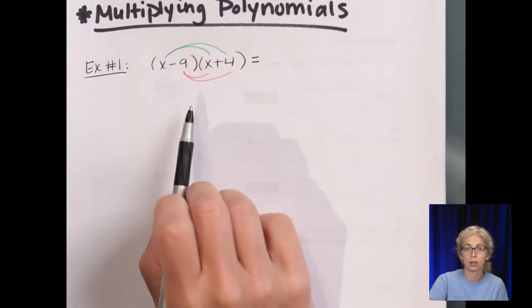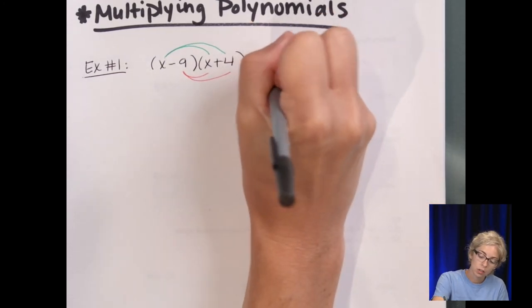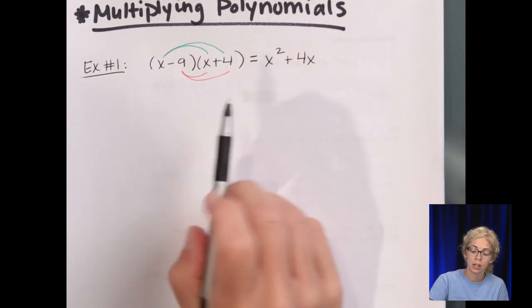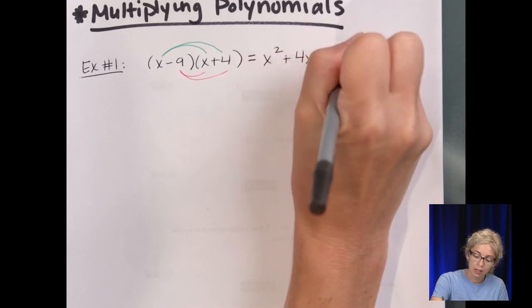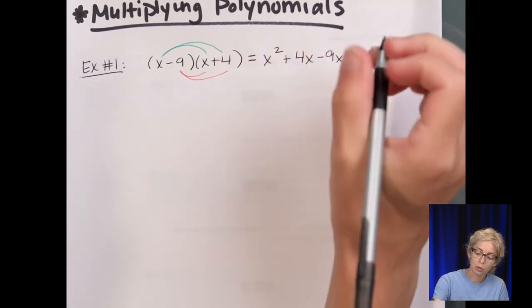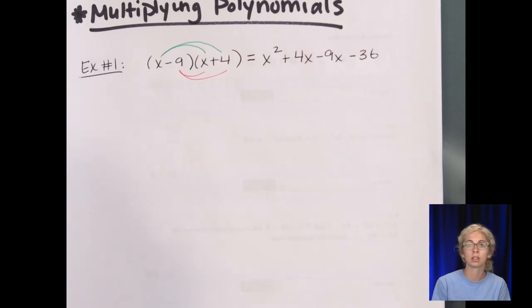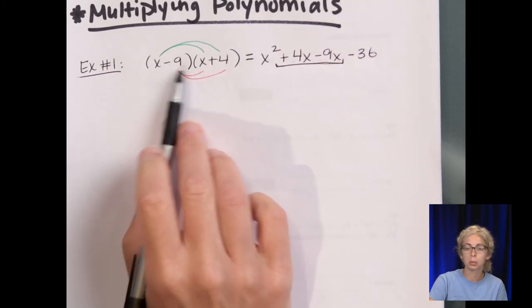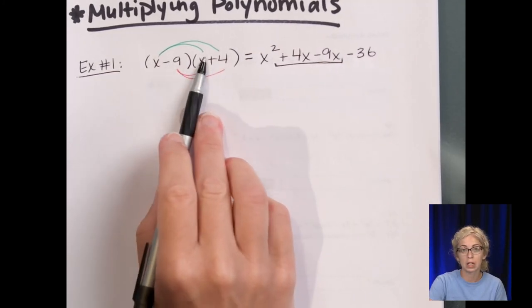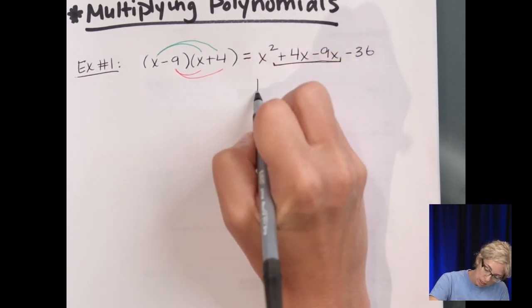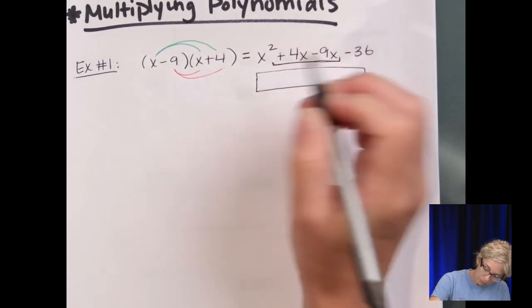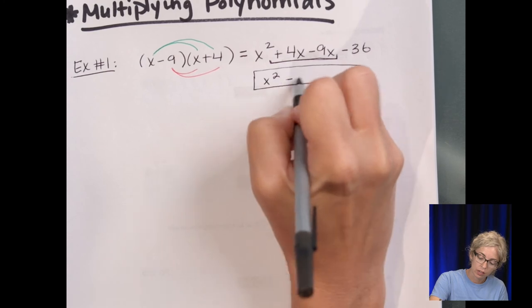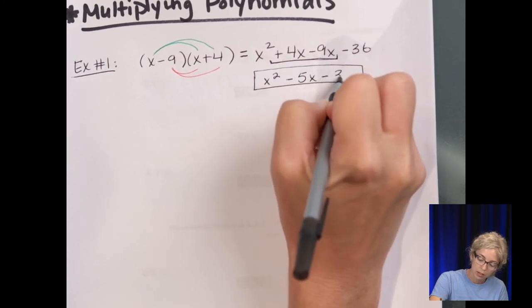Starting with the green: x times x is x squared. x times positive 4 is positive 4x. Negative 9 times x is negative 9x. And negative 9 times positive 4 is negative 36. Combining our two like terms, which will always be in the middle when multiplying two binomials with just x to the first power in each, our final answer is going to be the trinomial x squared, and positive 4 added to negative 9 is negative 5x, minus 36.